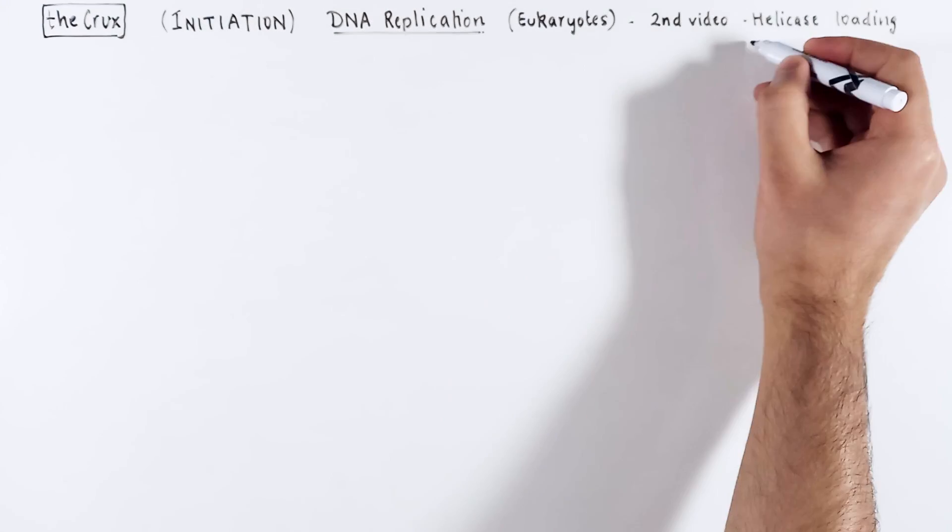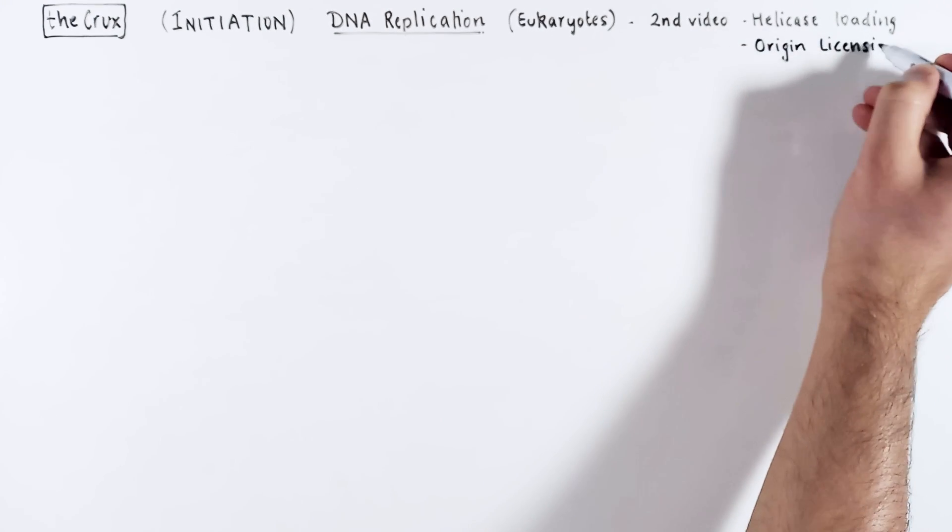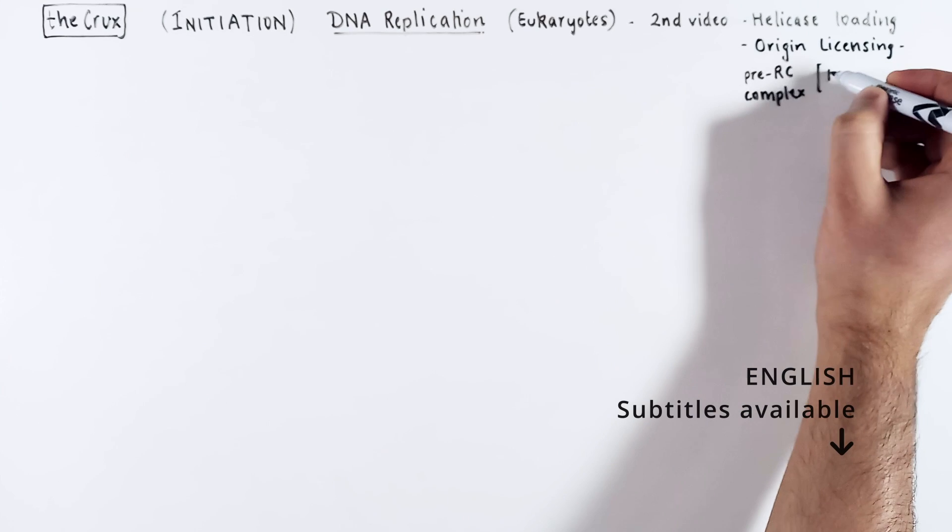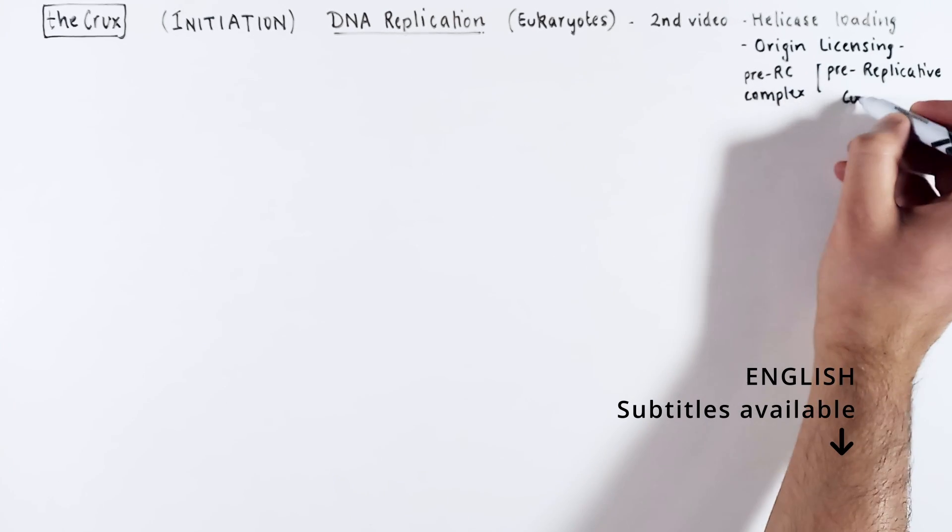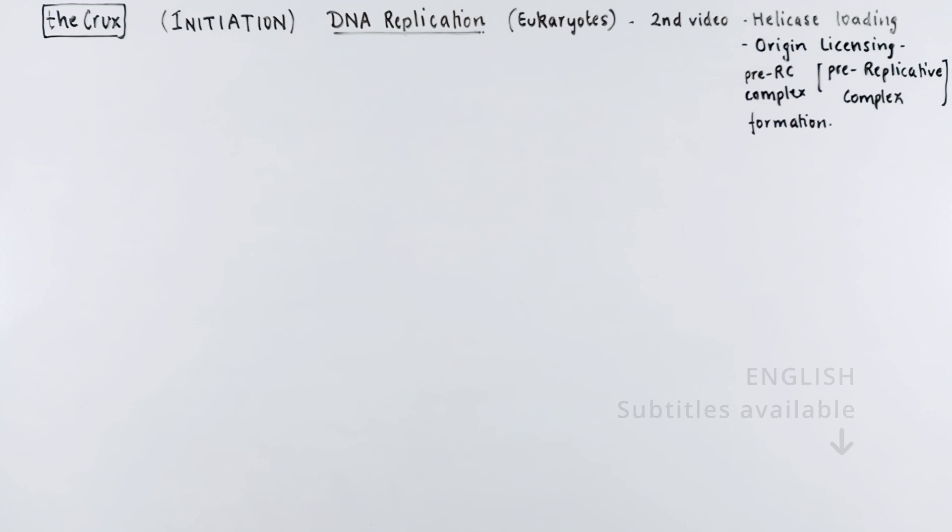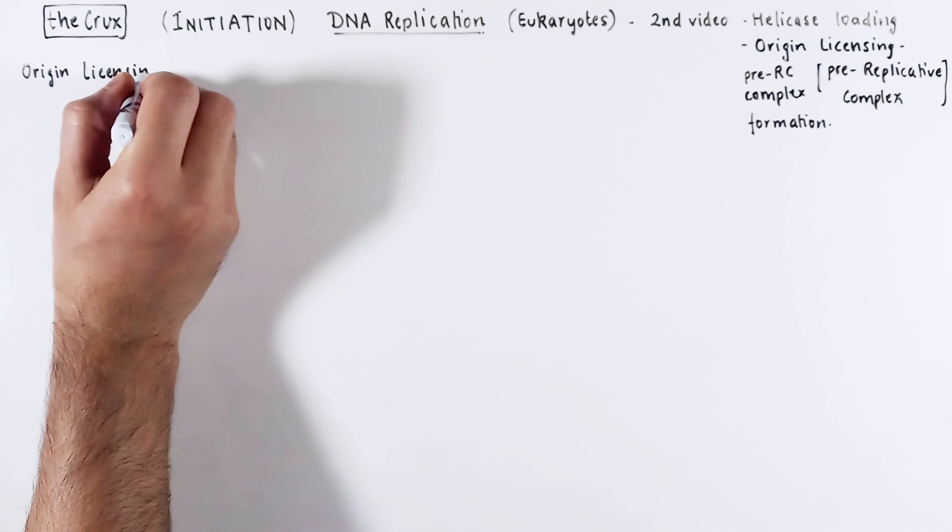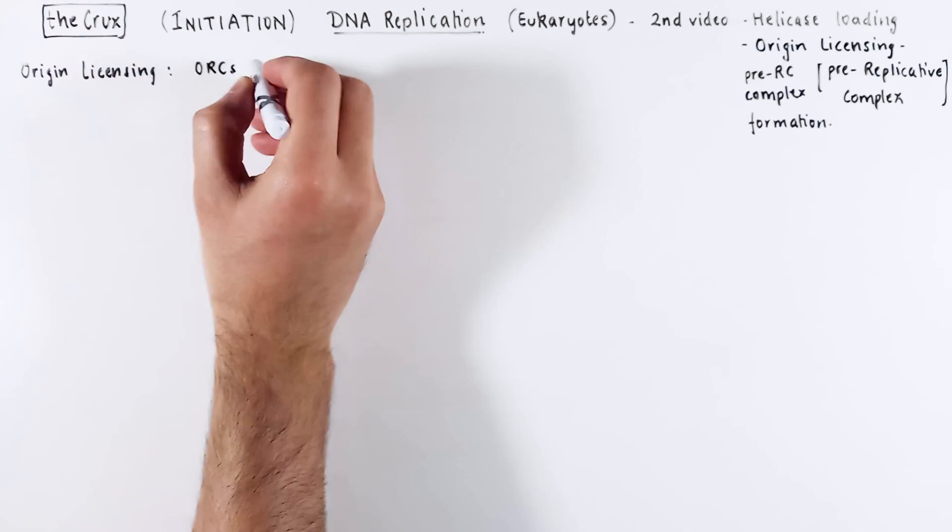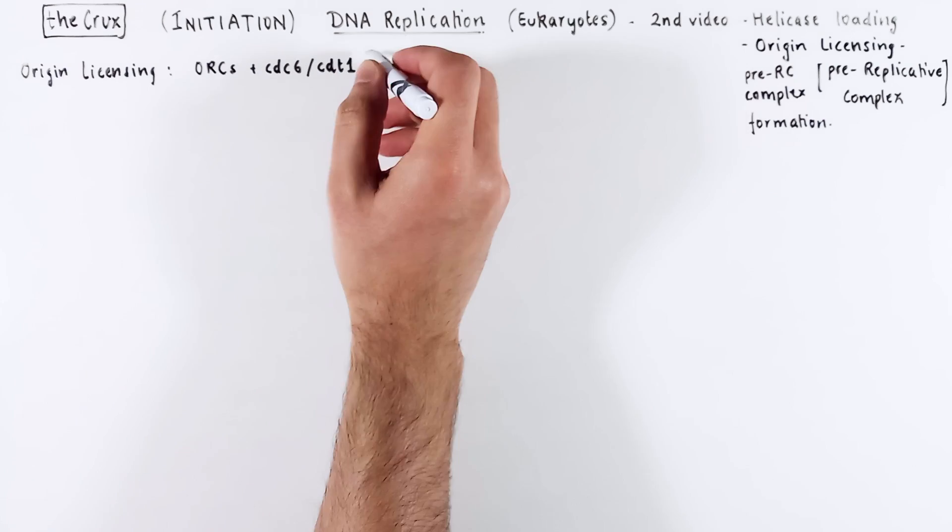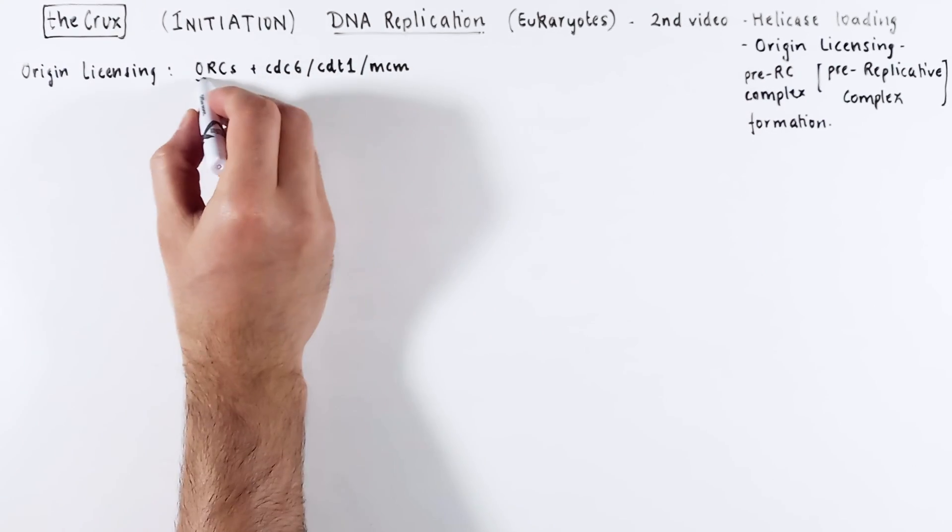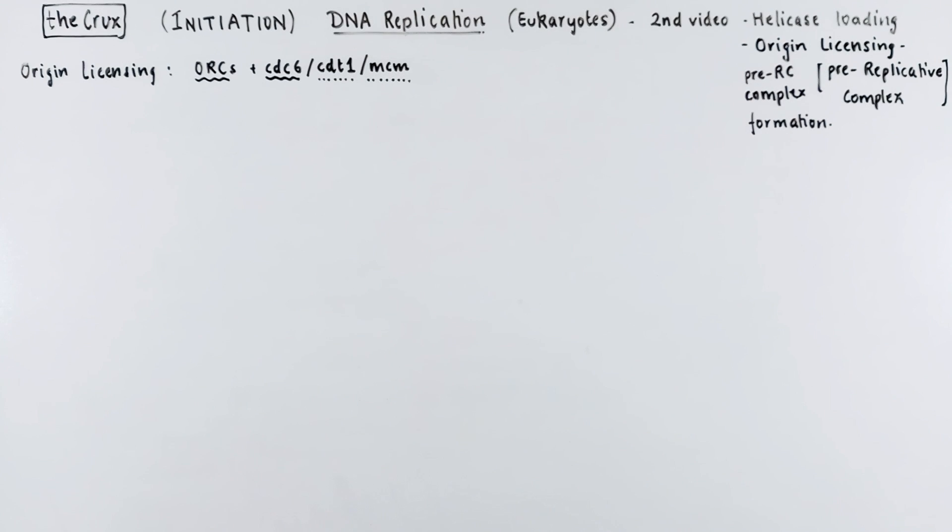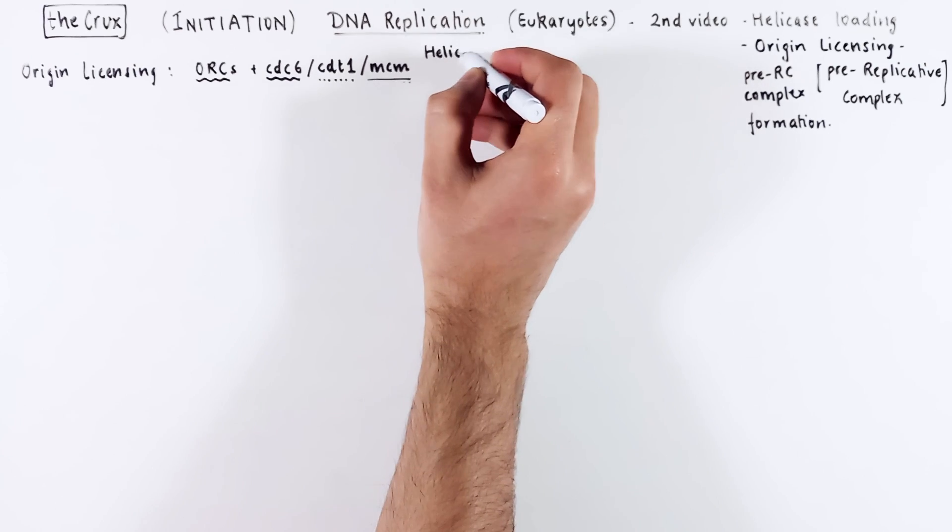This video will be about helicase loading, which is also known as origin licensing, and towards the end we will discuss how pre-replicative complex forms from origin licensing. If you recall the punchline from the first video, we said that origin licensing involves the coming together of ORC, CDC6, CDT1 and MCM proteins. We've already seen how ORC and CDC6 form a functional origin recognition complex. In this video we will see how CDT1 and MCM proteins assemble onto that functional origin.